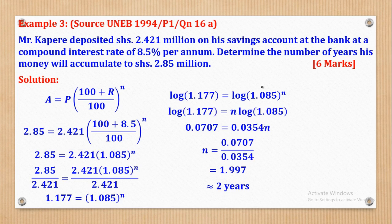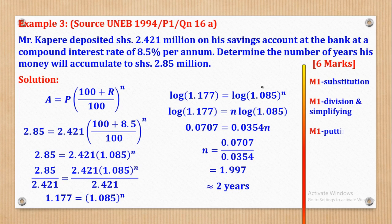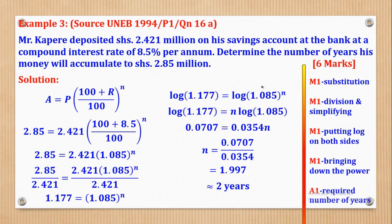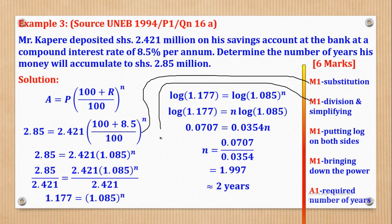For marking: M1 for substitution, M1 for division and simplifying, M1 for putting logarithm on both sides, M1 for bringing the power down, and M1 for the final number of years rounded off to the nearest whole number.